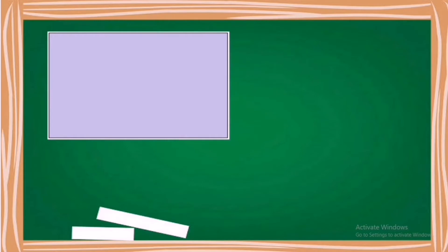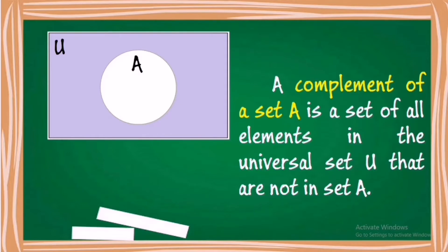Let us take a look at this Venn diagram. The shaded region of the Venn diagram represents the complement of A.